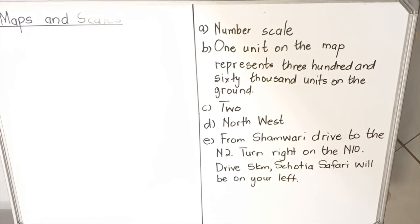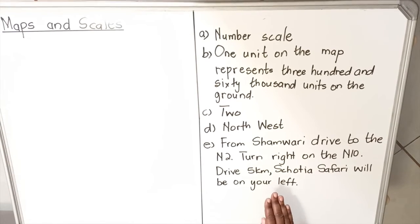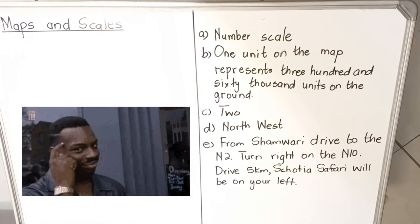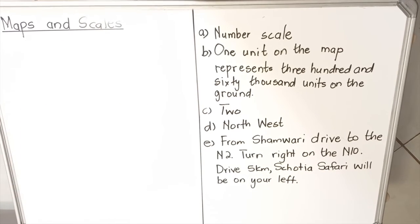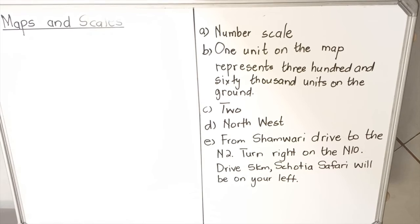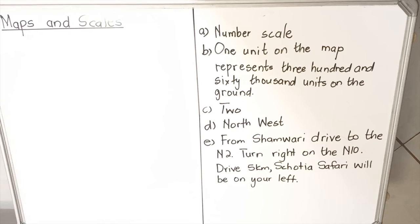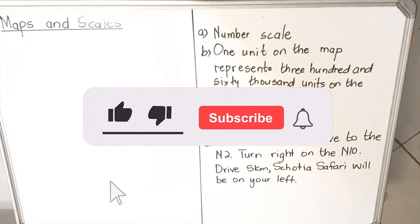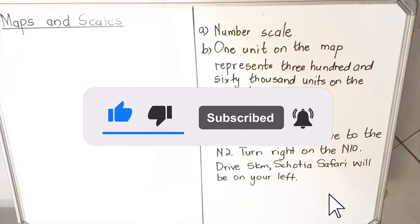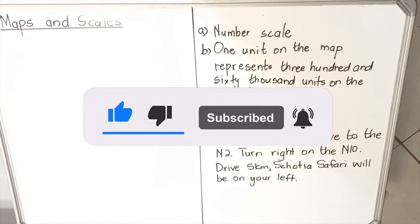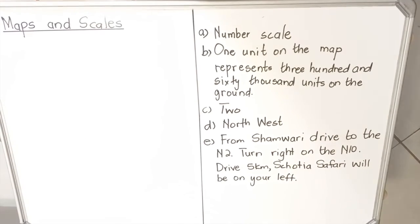This type of direction-giving question also appears in your English Paper 3, Section C — shorter transactional writing — where they ask you to give directions from one place to another. In maths literacy you're also practising for that. You use the road names, distances like five kilometers, and turns — left or right. Thank you for watching, this is the end of our lesson.